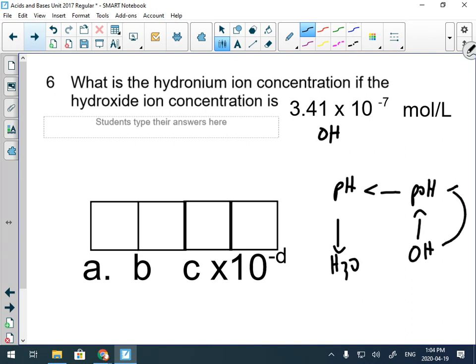Negative log of 3.41 times 10 to the minus 7, and that gives me 6.467 dot dot dot. Okay, so I've done the first step—this is 6.467. Now I have to convert that to pH.